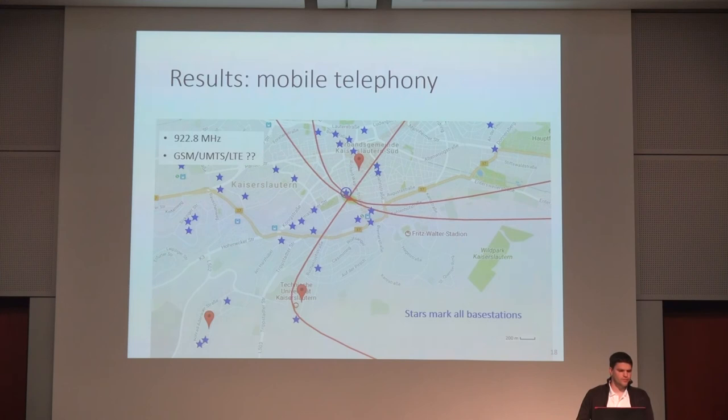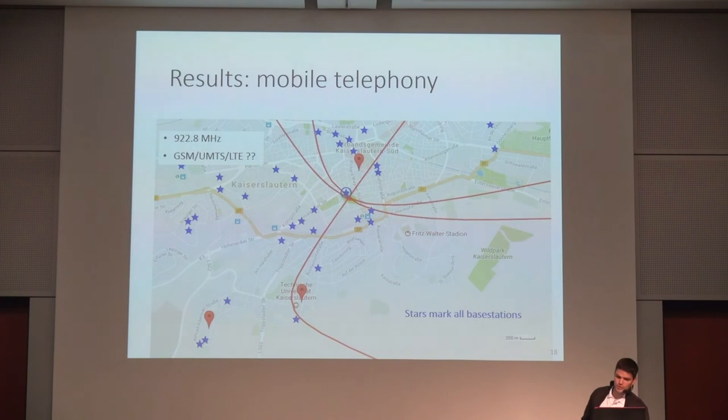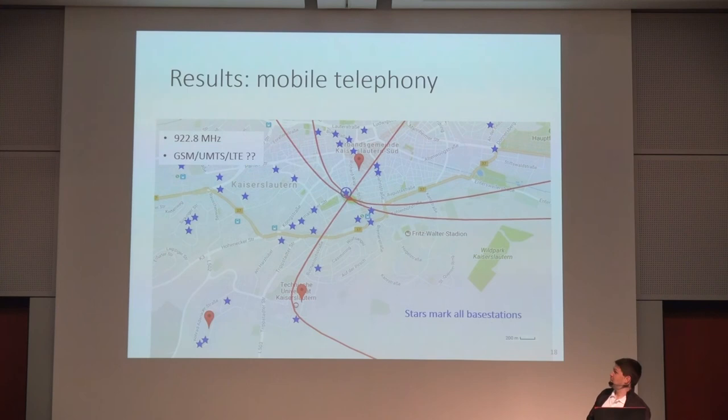The second signal analyzed was at 922 megahertz — probably mobile telephony, GSM, UMTS, or LTE. The hyperbolas intersect in a very nice manner at exactly one point. I have marked all the base stations in the city, and it really looks like the signal is coming from a nearby base station.